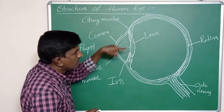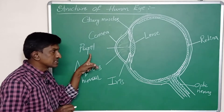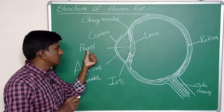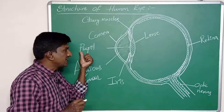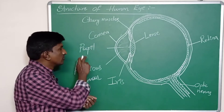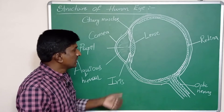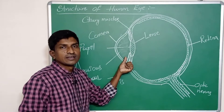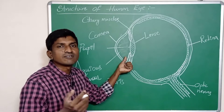A small hole is present at the center of the iris; that hole is said to be the pupil. Light enters into the eye through the pupil. So here the iris acts like a variable aperture for the entrance of light.